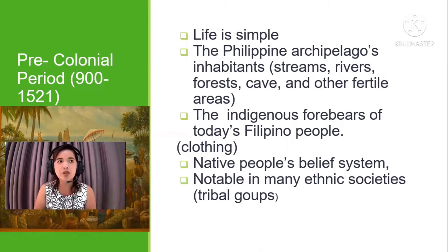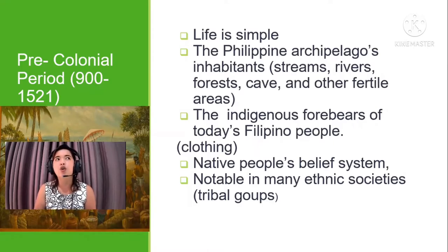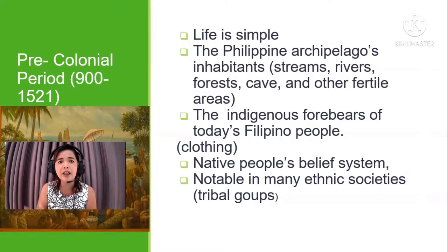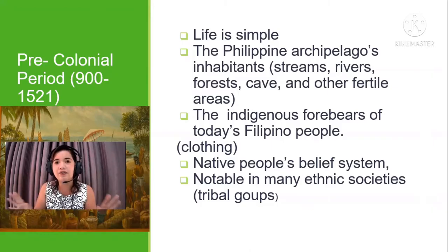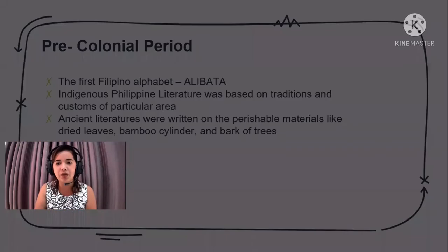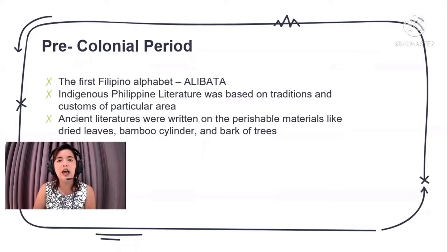Native people's belief system was very notable — they had superstitious beliefs evident in many ethnic societies, including tribal groups from Bisaya, Luzon, and Mindanao. Their culture was very vivid and present in the pre-colonial period. They also discovered the first Filipino alphabet, the alibata. Philippine literature was based on traditions and customs of particular areas, and ancient literatures were written on perishable materials like dried leaves, bamboo cylinders, and bark of trees.